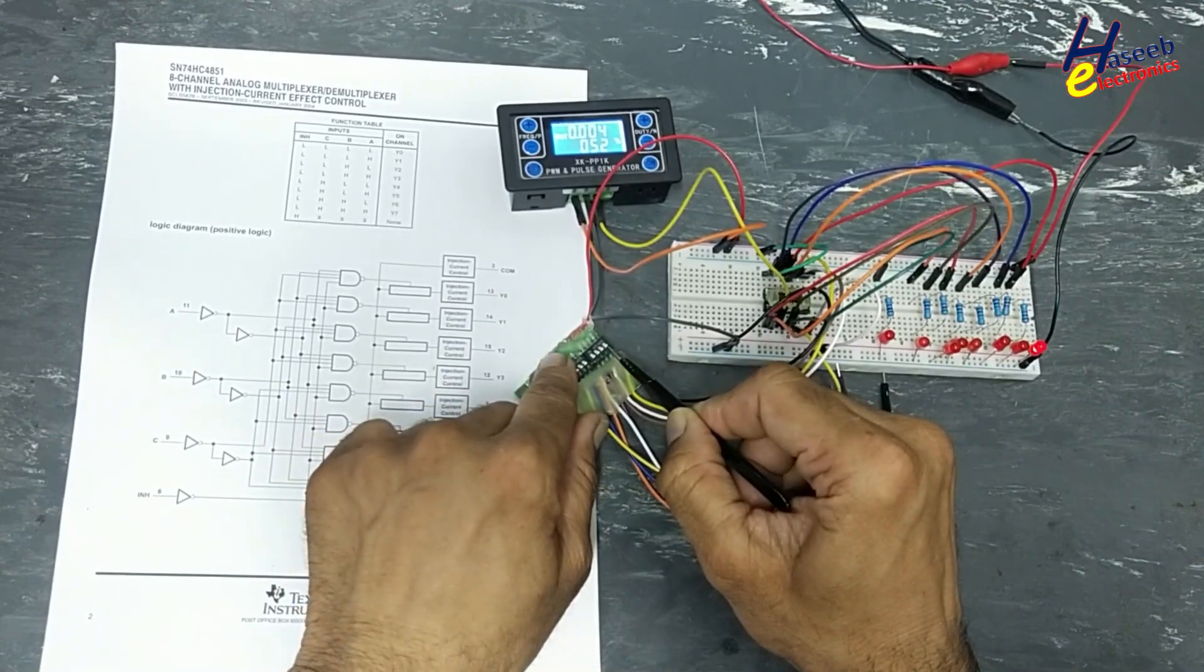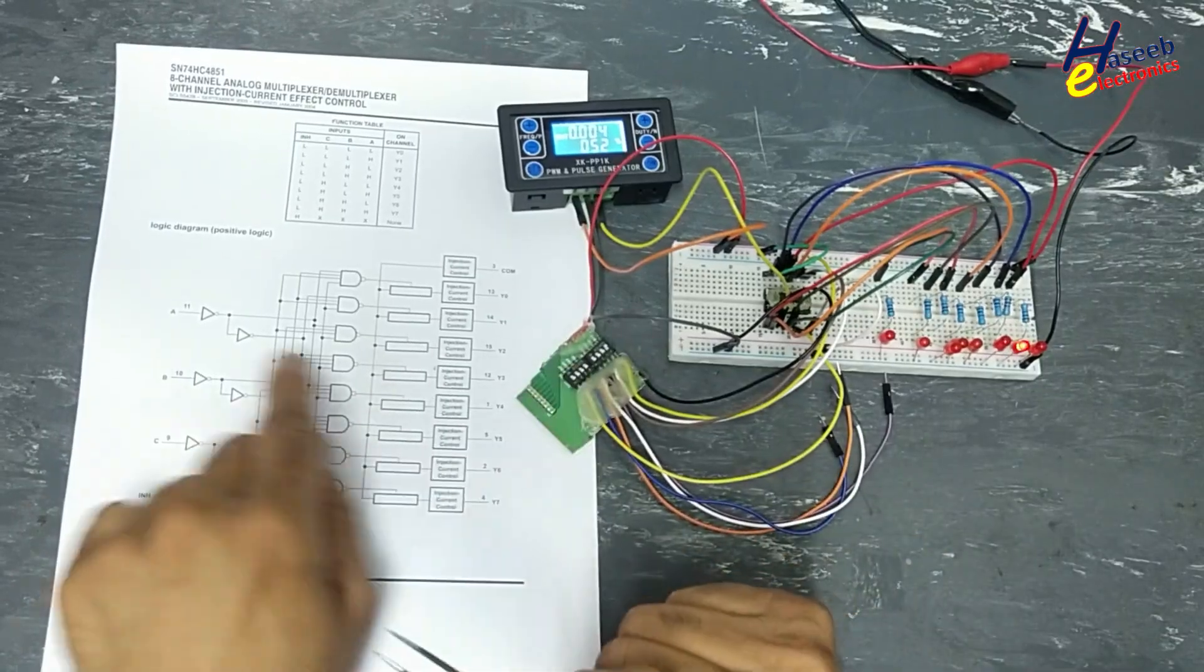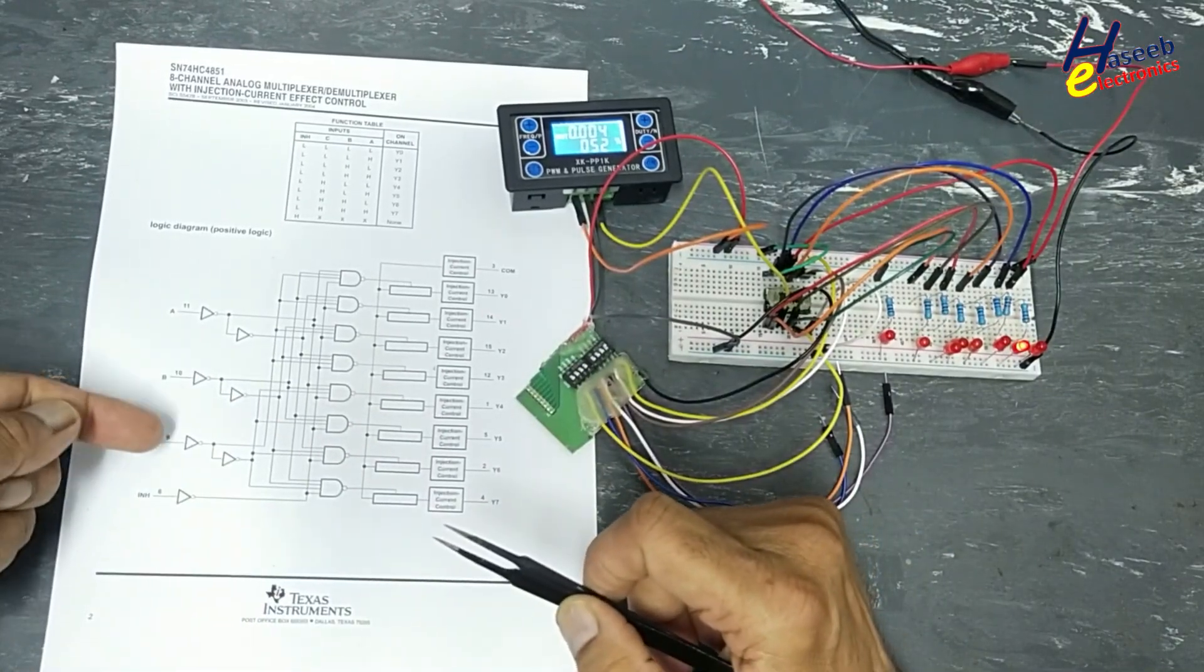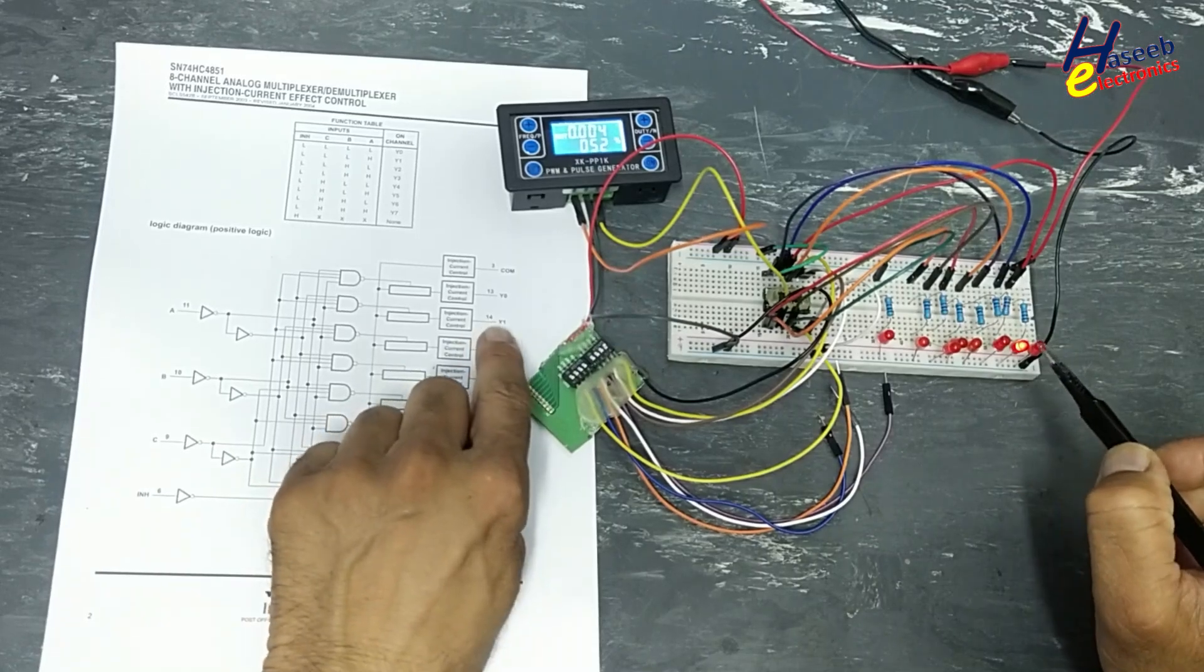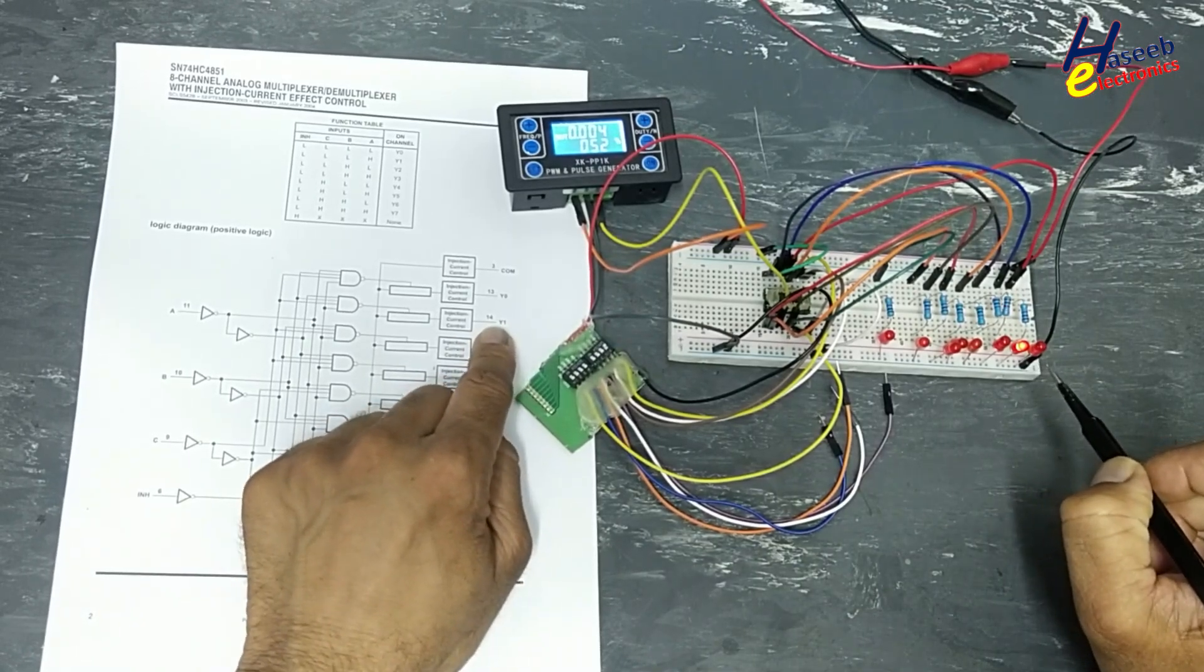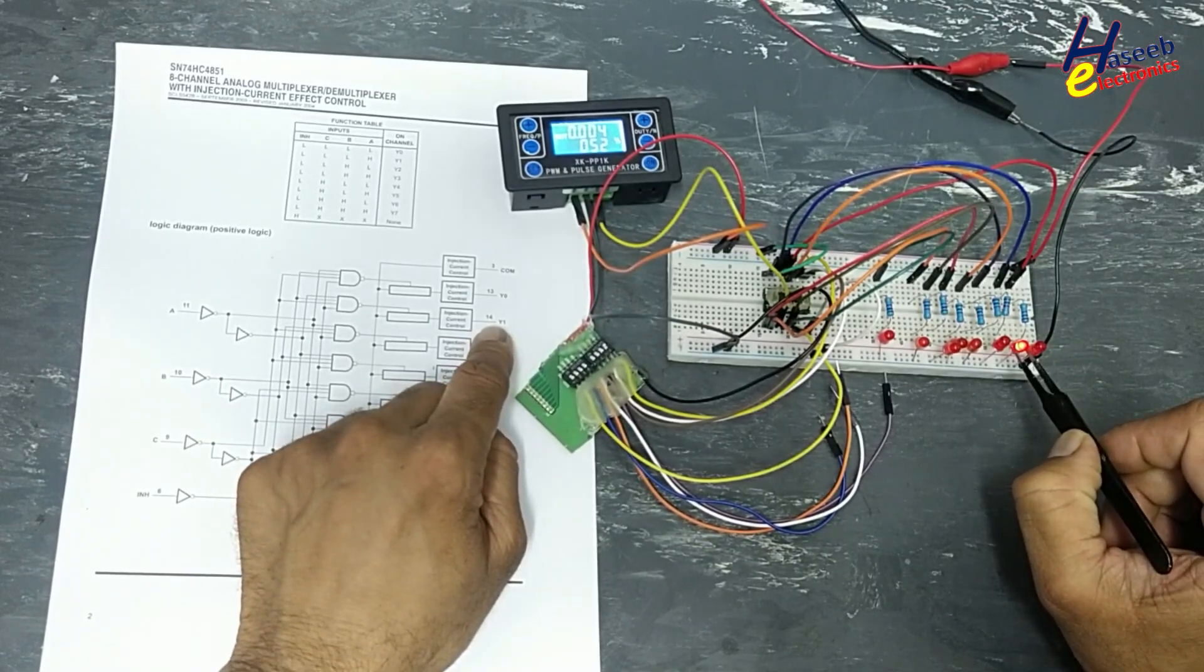If you will set A to one, that means zero zero one, Y one. Pin number 14 is providing output. This LED is blinking.